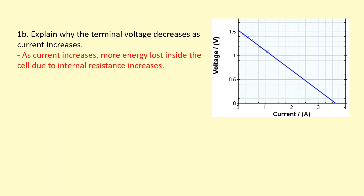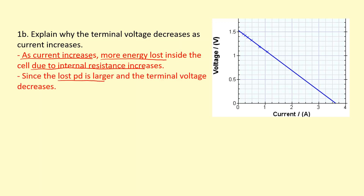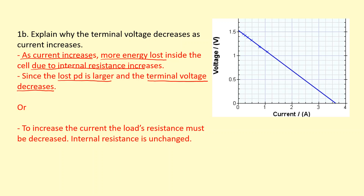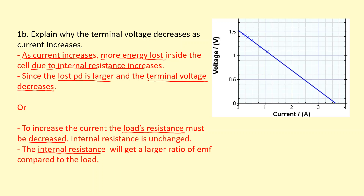Explain why the terminal voltage decreases as the current increases. As the current increases, there is more energy lost due to the internal resistance, so the lost pd is larger. If the lost pd is larger, the terminal voltage must decrease, because together the lost pd and terminal voltage add up to the EMF. Alternatively: to increase the current you decrease the total resistance by decreasing the load resistance. The internal resistance hasn't changed, so the internal resistor gets a larger ratio of the total EMF, and the terminal voltage is less.